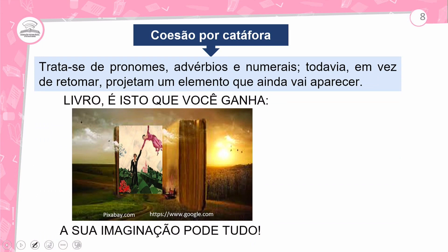Coesão por catáfora. Na catáfora, vai aparecer primeiro o elemento de coesão e depois o termo ao qual ele se refere. Também pode-se usar pronome, advérbio ou numeral. Em vez de retomar um termo já dito, o elemento de coesão projeta um elemento que ainda vai aparecer.